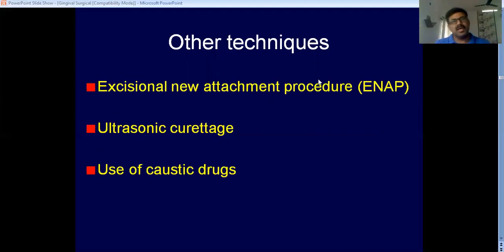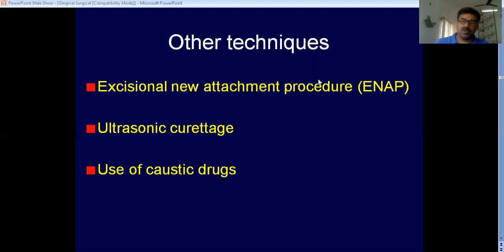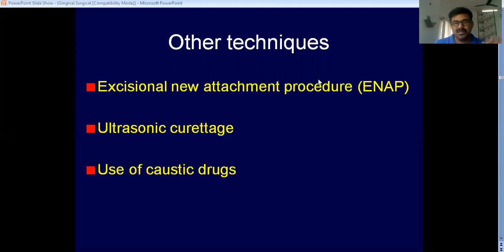There are other techniques for curettage. One is the Enap — the Excisional New Attachment Procedure — put forward by Newell and Brindle. You can also use ultrasonics for curettage, caustic chemical drugs, and nowadays even laser can be used for curettage.